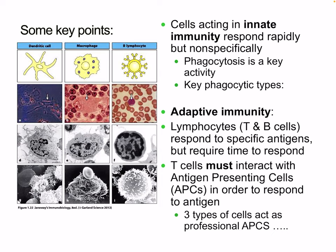Some key points to summarize: cells acting in innate immunity respond rapidly but not specifically. Phagocytosis is a key activity, and the key phagocytes include neutrophils (PMNs) and macrophages. In adaptive immunity, we have lymphocytes — T and B cells — which respond to specific antigens but require time. T cells must interact with APCs to respond to antigen. The three types of APCs are dendritic cells, macrophages, and B cells.